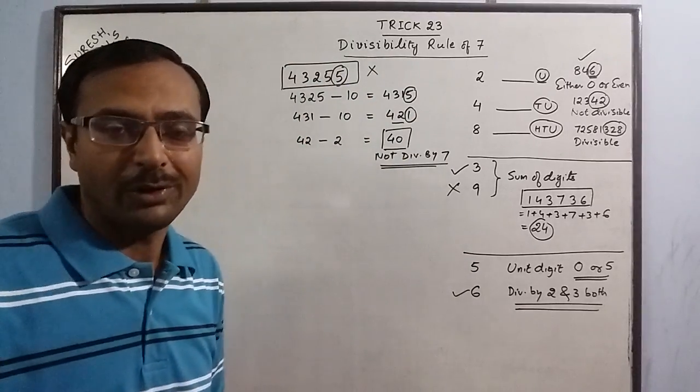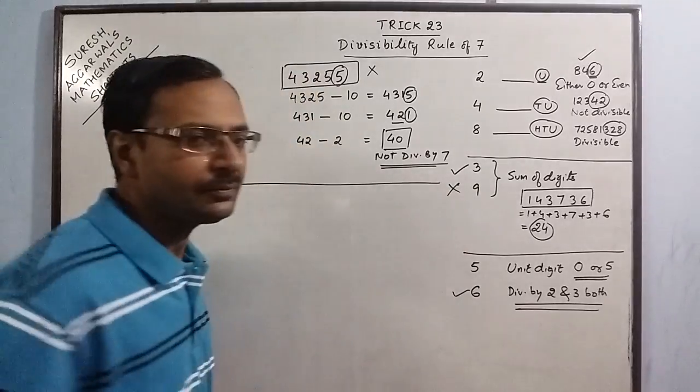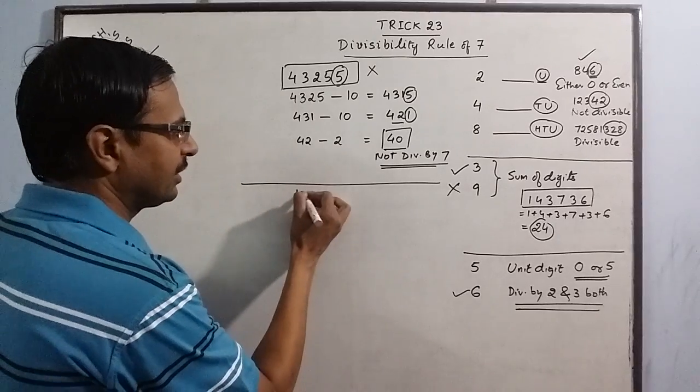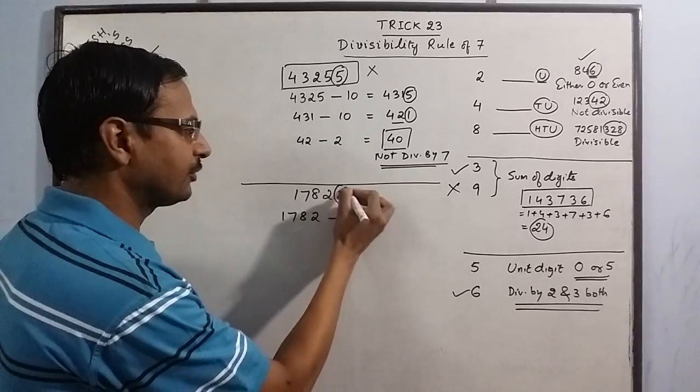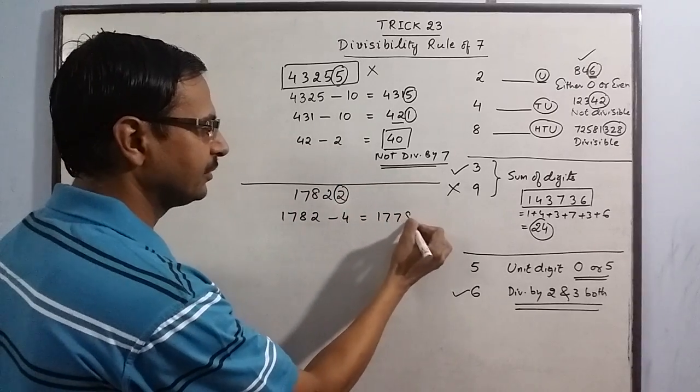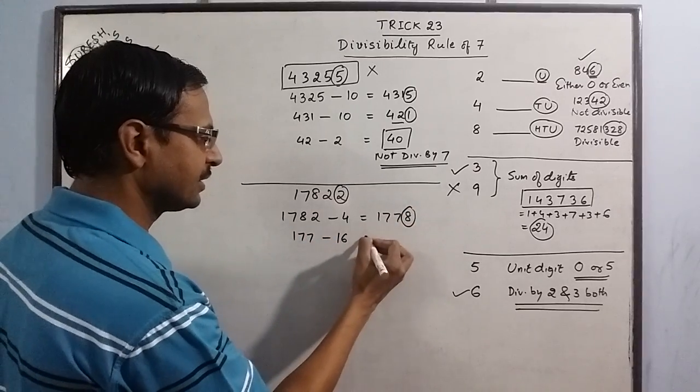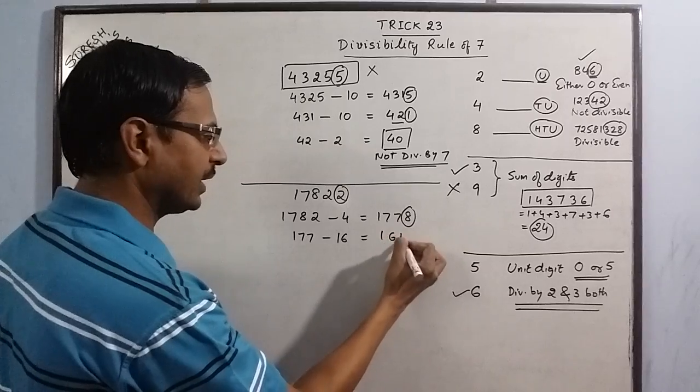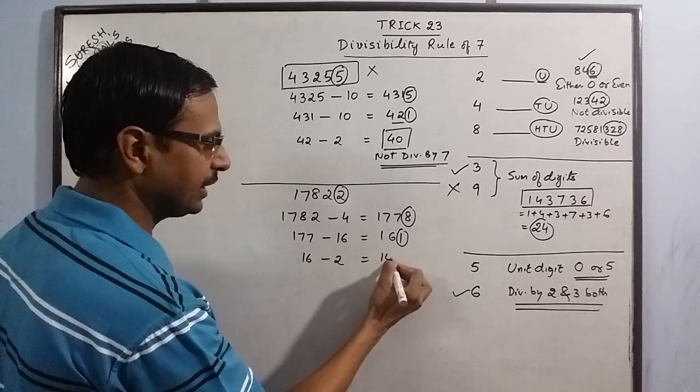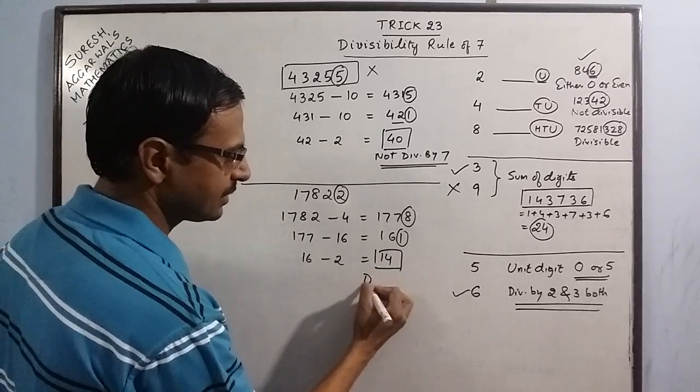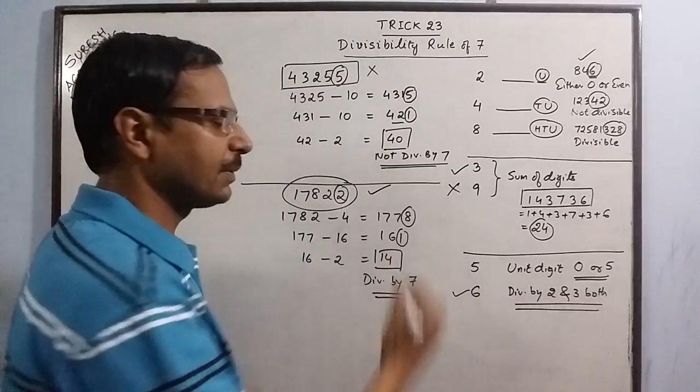So this is the rule for divisibility by 7. Let us do it once more. I will take another number, say we have 17822. Now apply the rule: 1782 minus double of 2 is 4, so 1778. 177 minus double of 8 is 16, so 161. 16 minus double of 1 is 2, we get 14. And 14 is divisible by 7. Therefore, entire number is divisible by 7.